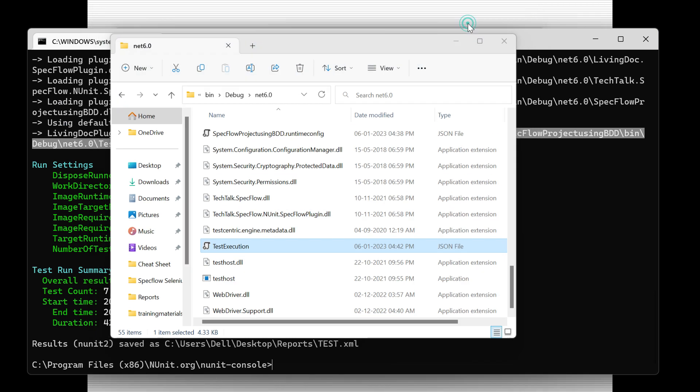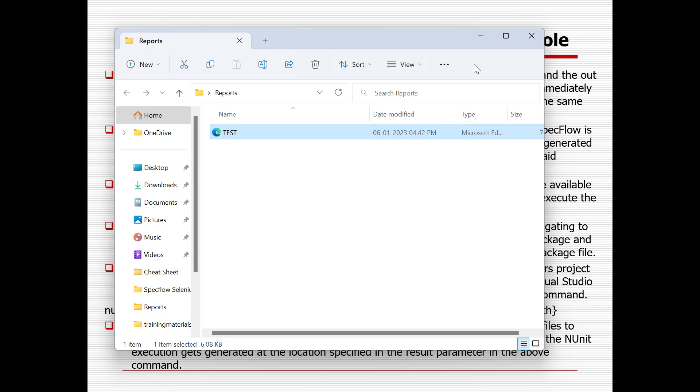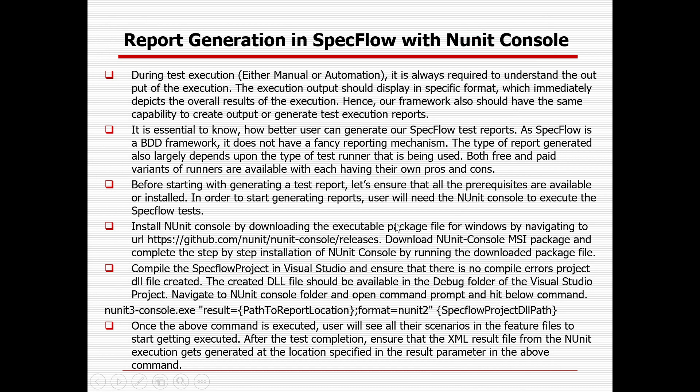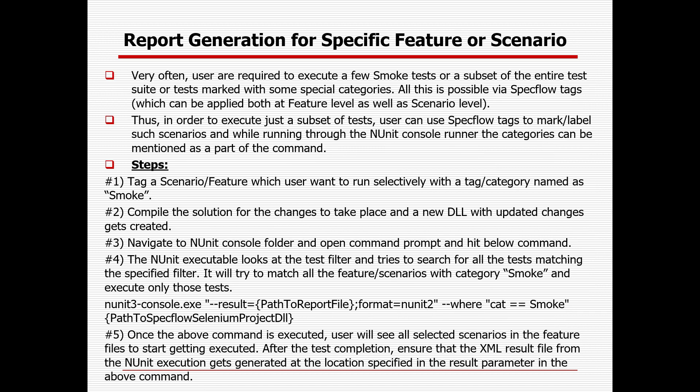So that is the way to generate the report even without opening Visual Studio, using NUnit Console. Now the next question is: suppose your SpecFlow project has multiple features and multiple scenarios and you don't want to execute everything — you want to execute some specific features or scenarios. You can use the concept of tagging. For specific scenarios or features you can give tags such as regression, smoke, functional, UAT, or application-specific tags.